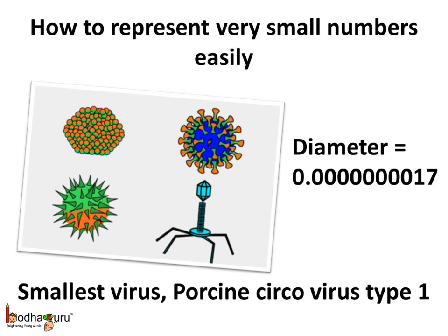And lastly, do you know which is the smallest virus? Well, it is porcine circovirus — in short, PCV. This smallest virus, porcine circovirus type 1, has a diameter of 17 multiplied by 10 to the power minus 9 meters.